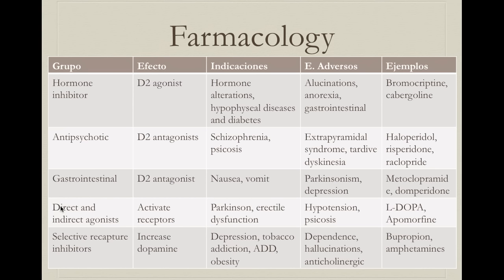Direct and indirect agonists can be used when we want to increase dopaminergic tone in the brain — for example, in Parkinson's disease to improve motor control, or in erectile dysfunction (though now largely replaced by safer drugs like Viagra). Main side effects are hypotension, because dopamine directly causes vasodilation, and psychosis. Main examples are L-DOPA and apomorphine.